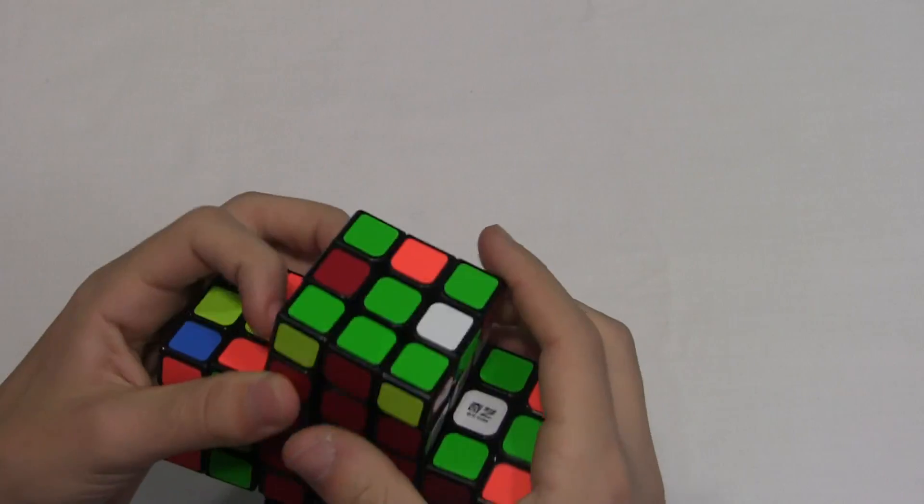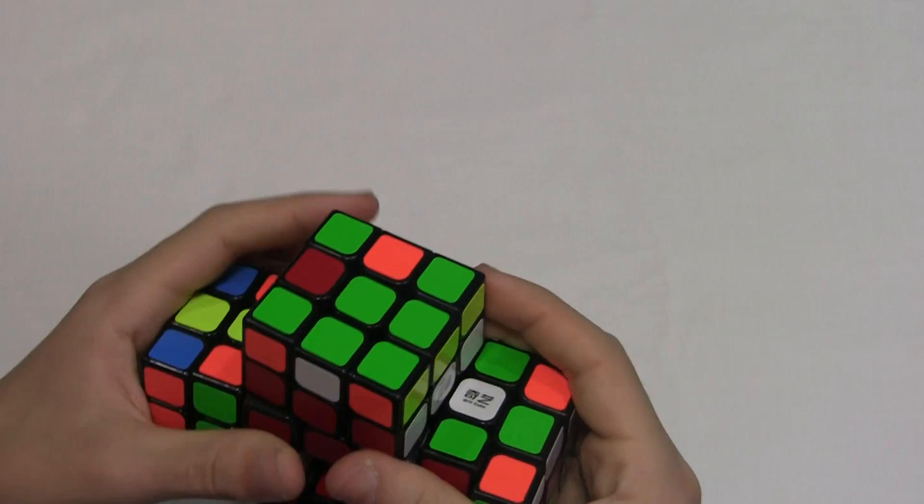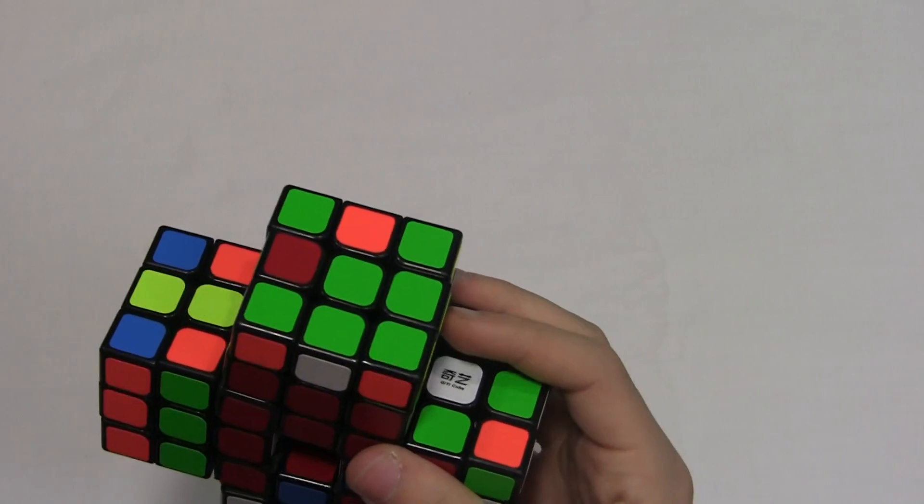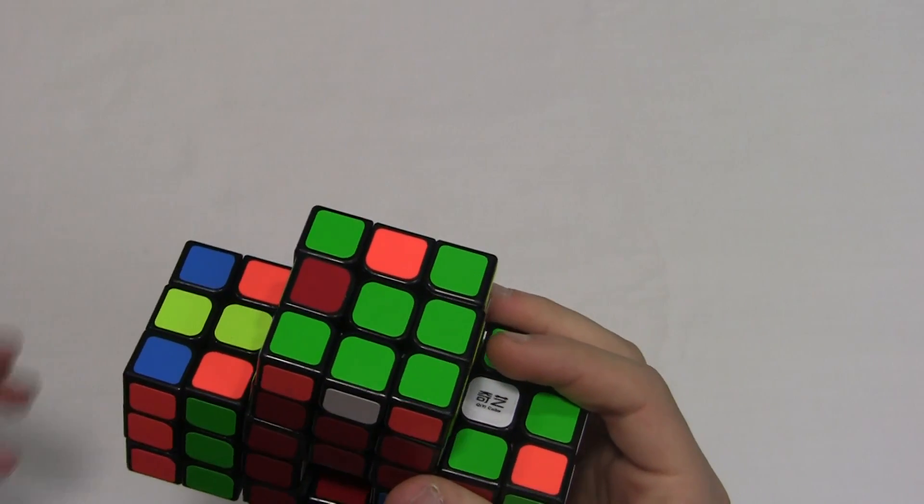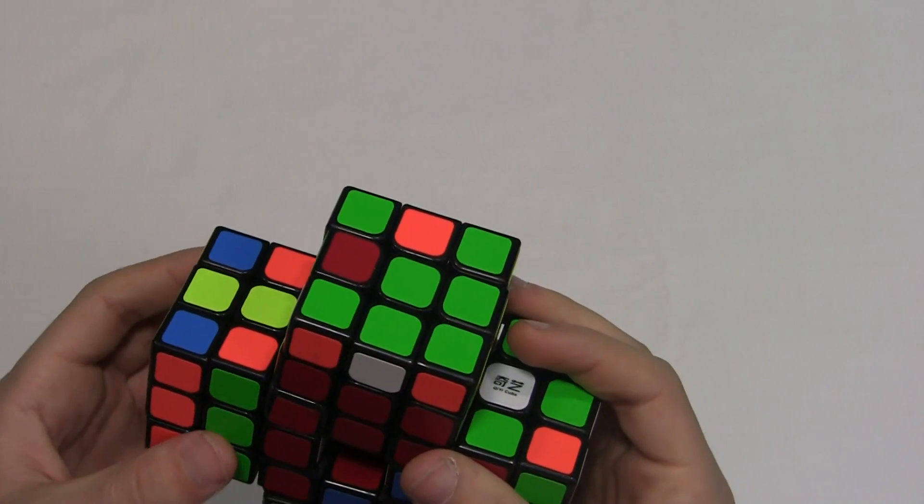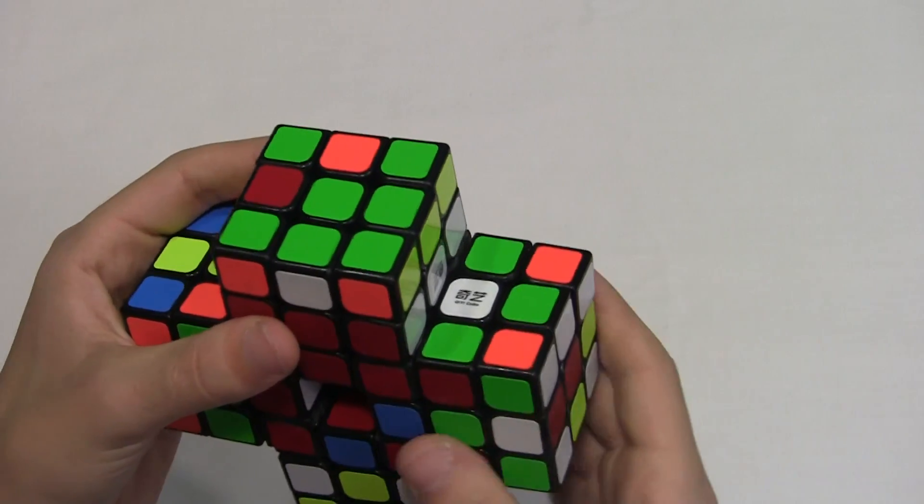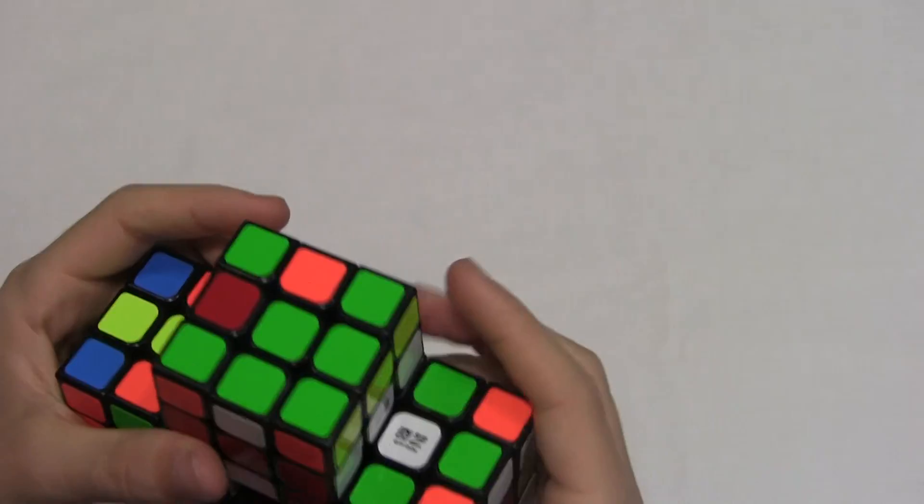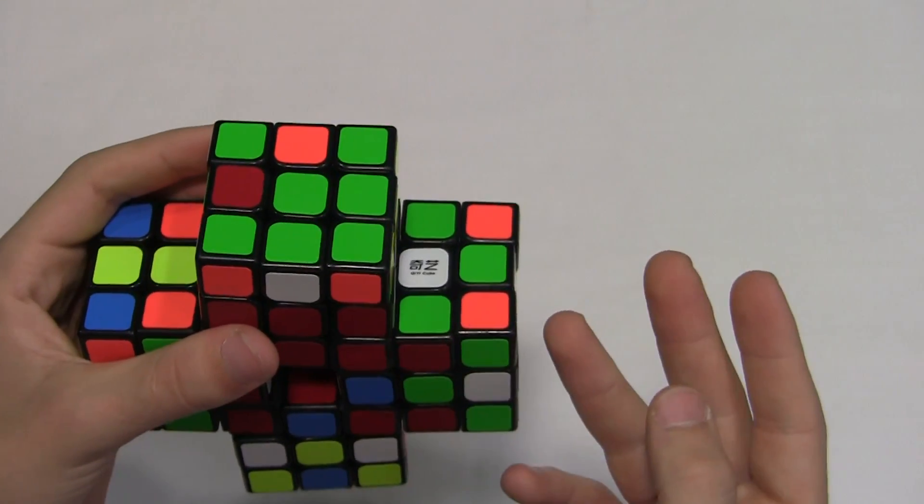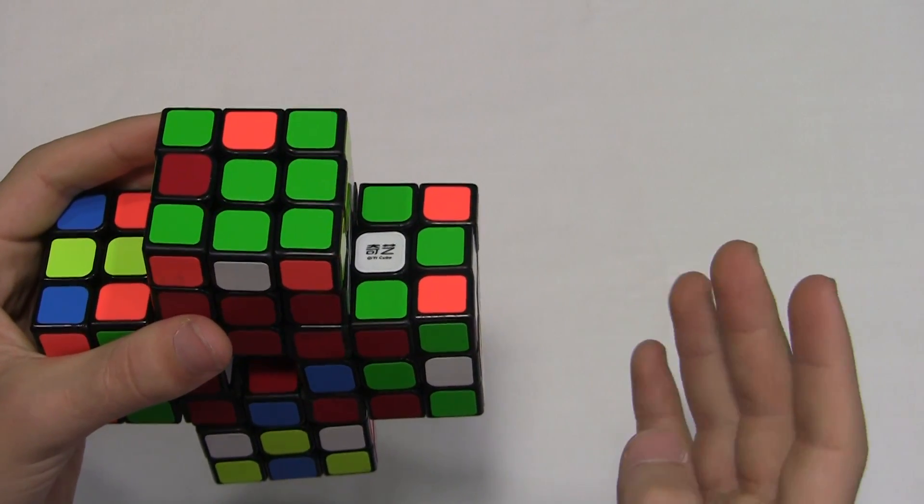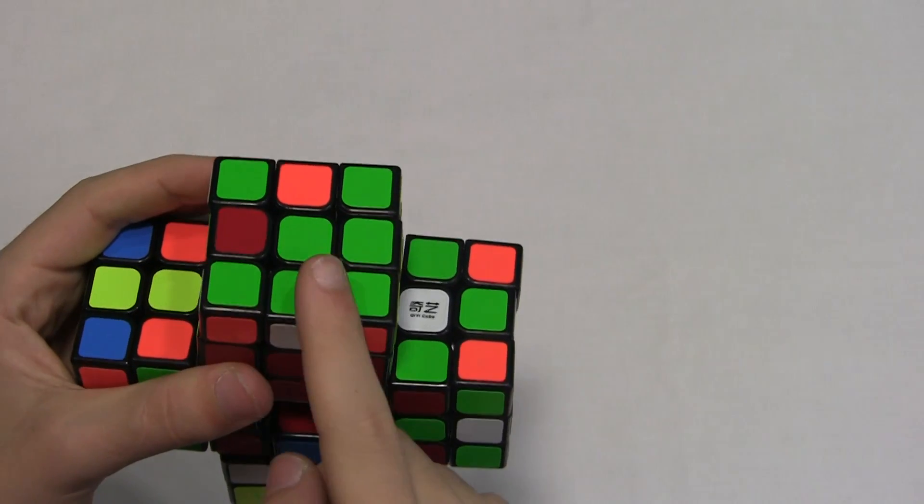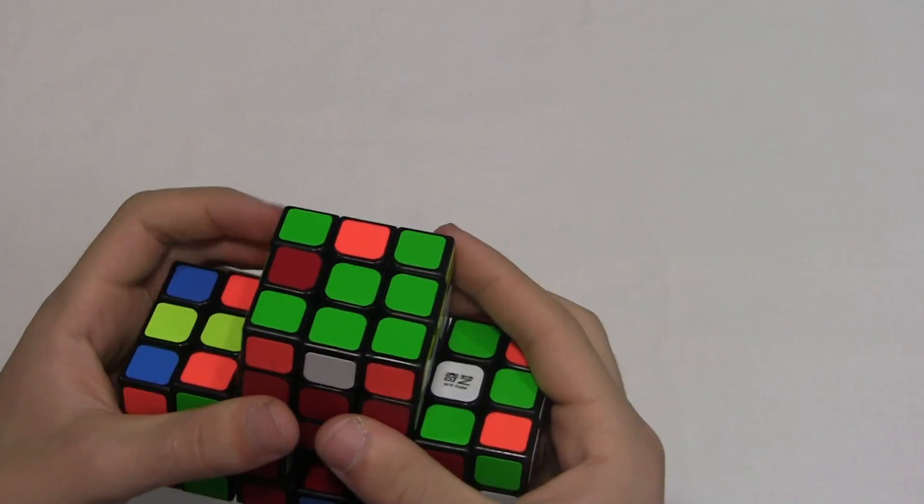And then there is OLL, and it does not go to the cross, because the cross cannot be solved with middle moves, apparently. So, there's one, I think, four different combinations that it can be on OLL.